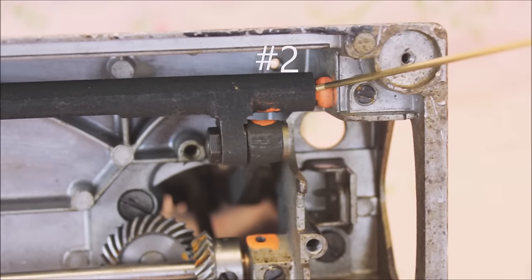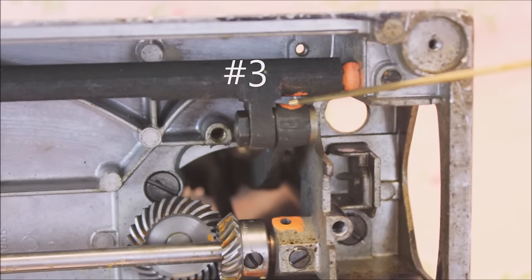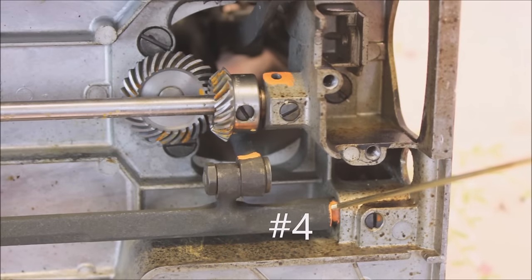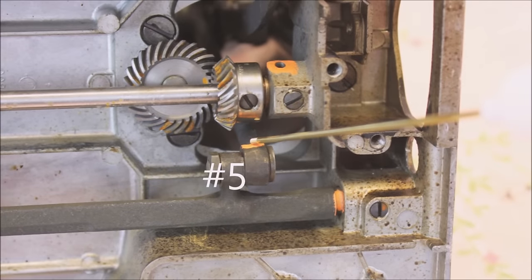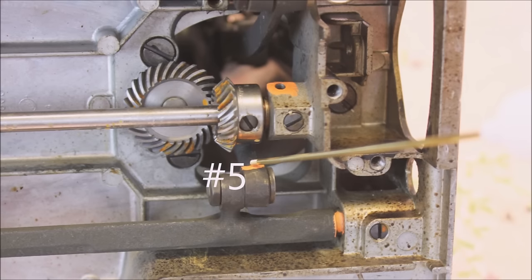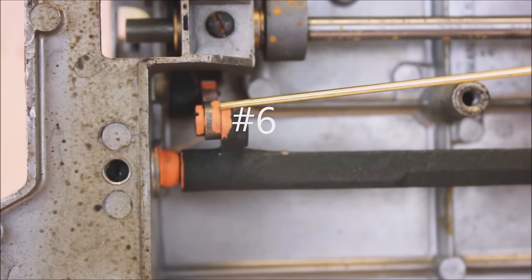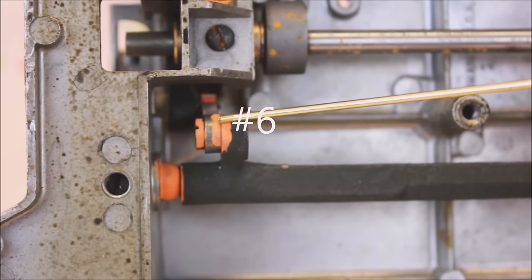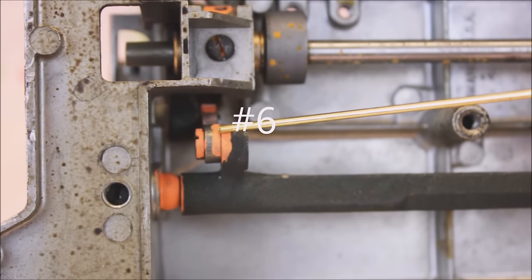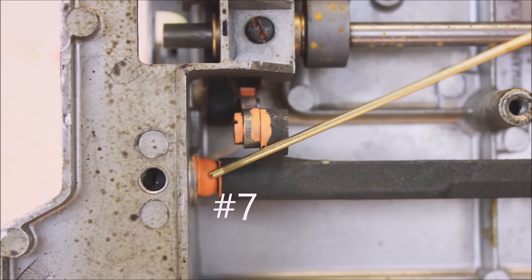The second, the third, and number four, number five, number six. Now this one here, the diagram actually shows two oiling points on each side of that little arm there. Once you oil it in one spot, the oil kind of goes where it needs. So it really only needs one drop there. And number seven.